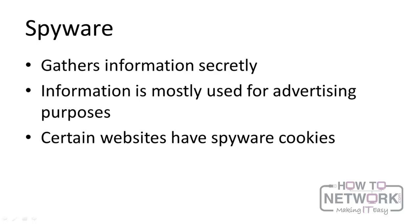A cookie is mostly useful for websites that want to remember information on you — for instance, a website remembering your browsing history like on Amazon, or your password, making for a better experience. However, some websites have spyware cookies that are going to do things you don't want them to — collecting information you haven't consented to share.